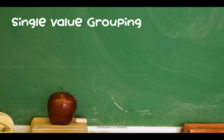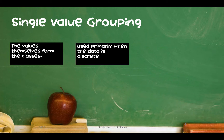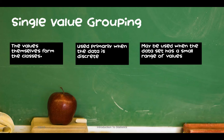Let's get started with single value grouping. In this case, the values themselves form the classes or bins — each individual value becomes its own class. This method is primarily used when the data is discrete, and it may be used as long as there is a small range of values.